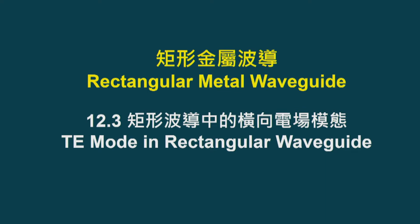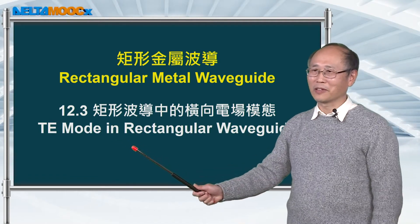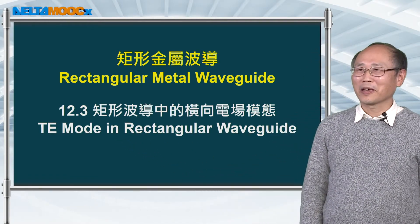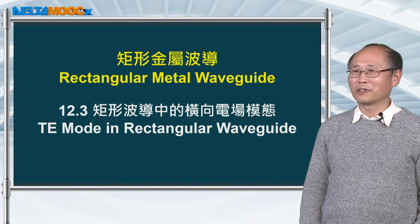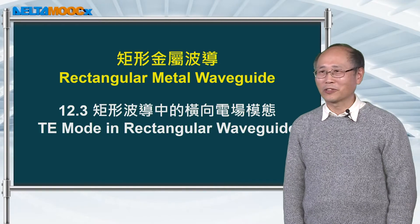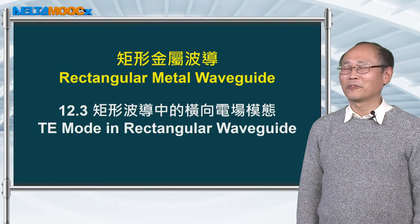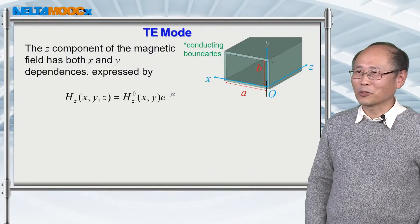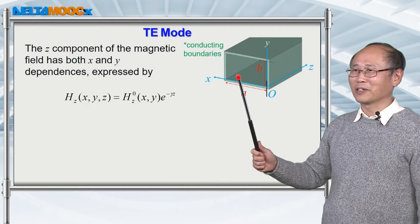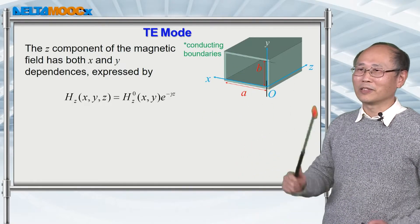In this session, I want to switch our discussion from TM mode to TE mode in the rectangular waveguide. You're going to see very similar derivations. I purposely repeat the calculation so that you can gradually get familiar with the steps for the analysis. We have a two-dimensional boundary along the transverse direction, and the wave propagates along the z-direction.